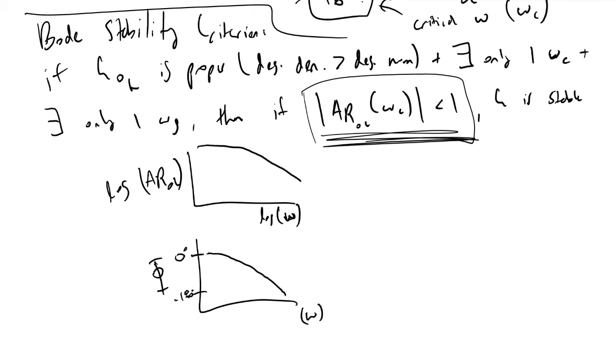What this Bode stability criterion tells us is that to determine where omega c is, the first thing to do is look at this bottom plot here, find where 180 is, look at what omega is when our phase angle is 180 degrees. This corresponds to our critical phase frequency. We go from here to here, then vertically up into this plot, then we look over to the left. If the value here is less than 1, say 0.5, then we could conclude that our controller is stable.